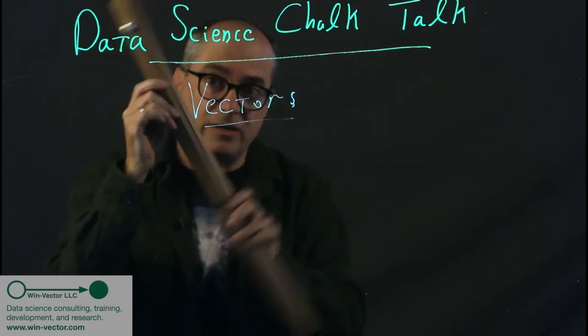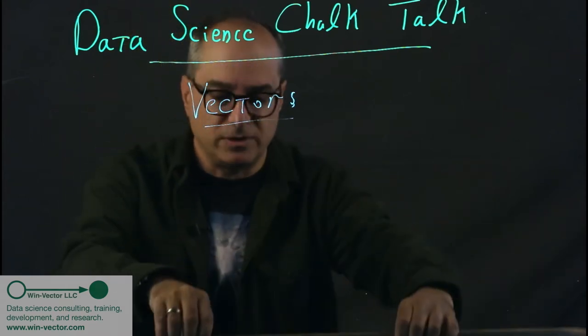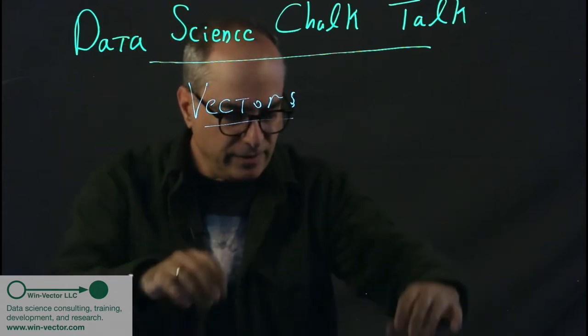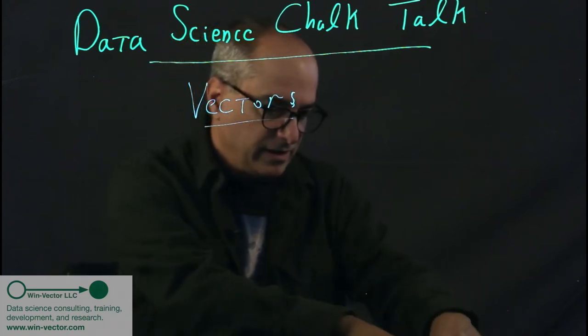You always have to be asking, are we dealing with a row vector or a column vector? Though from a computer science point of view, they're fairly indistinguishable. Now, the vectors are essentially lists of numbers.